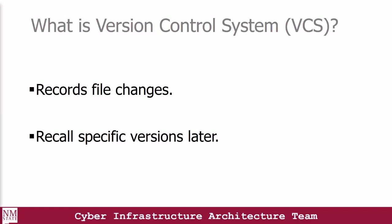A version control software keeps track of every modification to the code in a special kind of database. That is to say, if a mistake is made, developers can turn back the clock and compare earlier versions of the code to help fix the mistake, while minimizing disruption to all team members.